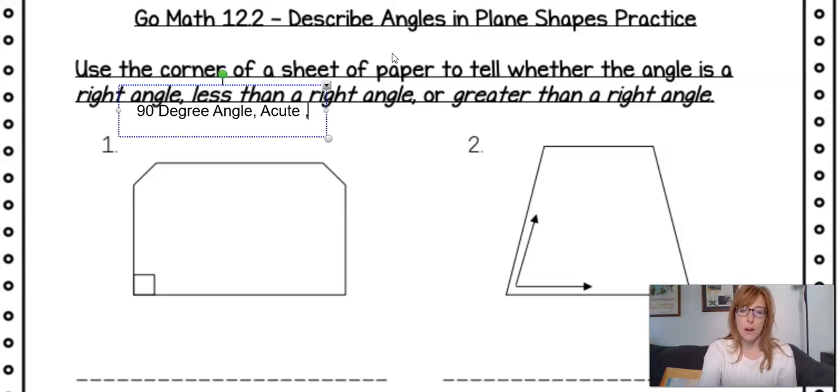And then our other one, if you have a 90 degree angle and it goes bigger than a 90 degree angle, hopefully you're thinking to yourself, what is that word that has the B like in big? And that would be obtuse.